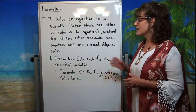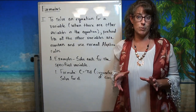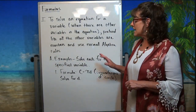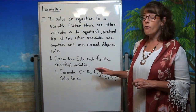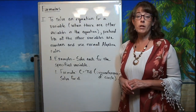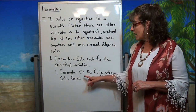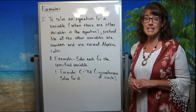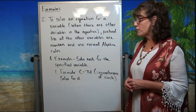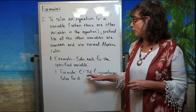I've got about six examples for us to look at. In each one, we're going to solve for the specified variable. Take a look at this first formula: c equals pi d. This happens to be the formula for the circumference of a circle, and what we're going to do is solve for d.